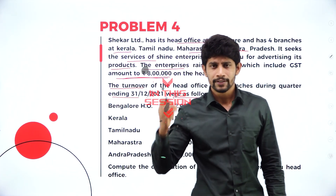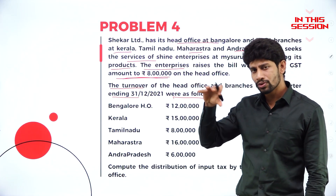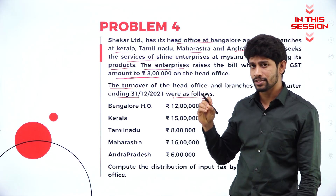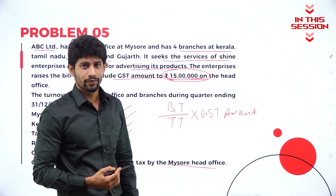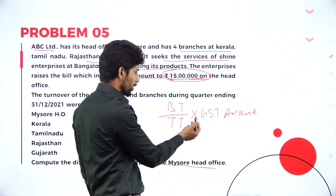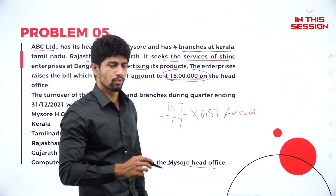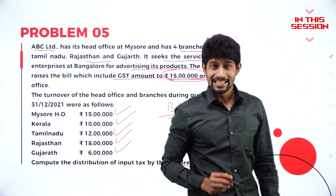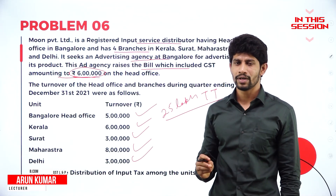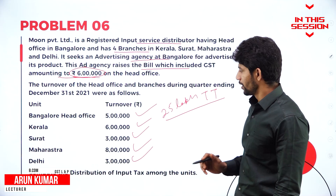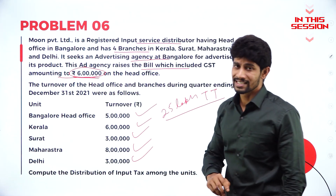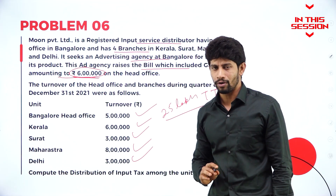We are going to distribute the tax amount to the different departments based on the turnover of each branch. The formula is branch turnover divided by total turnover into GST amount, or GST amount into branch turnover divided by total turnover — both are the same, you will get the same answer. If you total all the five branches' turnover you will get the total turnover. Total turnover is 25 lakh and the GST amount is 6 lakh, so this is enough to solve the problem.